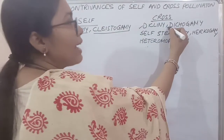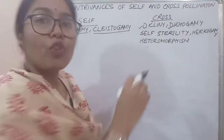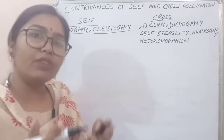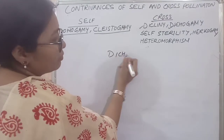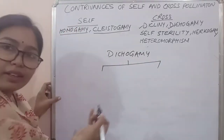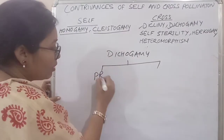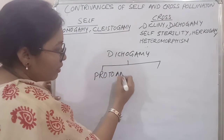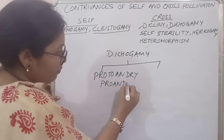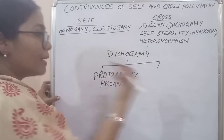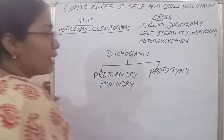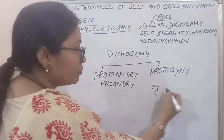The next one is dicogamy. Like homogamy, dicogamy is the opposite — when the gynoecium and androecium mature at different times. If the anther, the male part, matures first, those are called proto-andry or pro-andry — example: Hibiscus. If the gynoecium, the female part, matures first, they are called proto-gyny — example: Mirabilis.